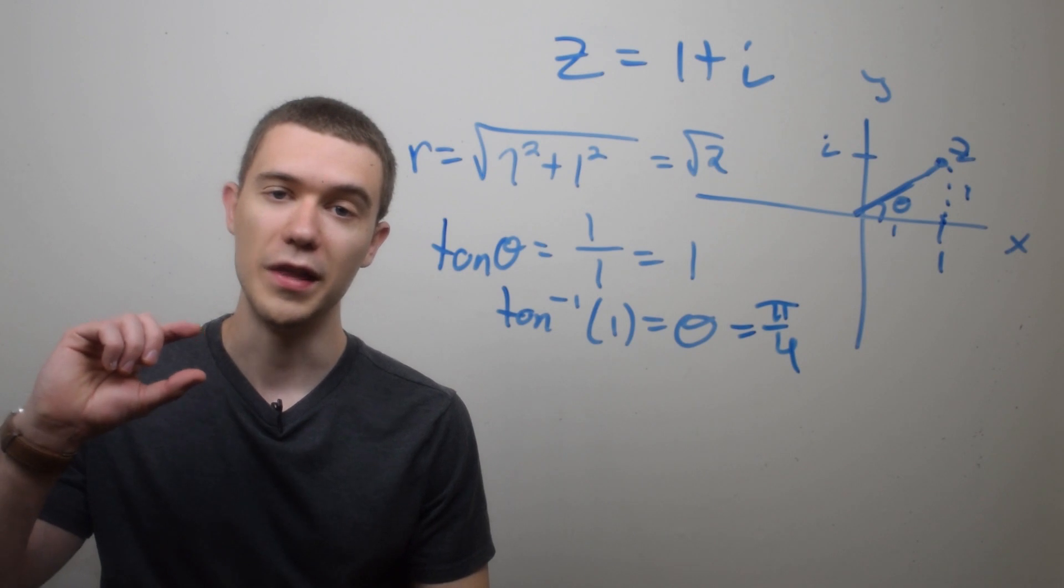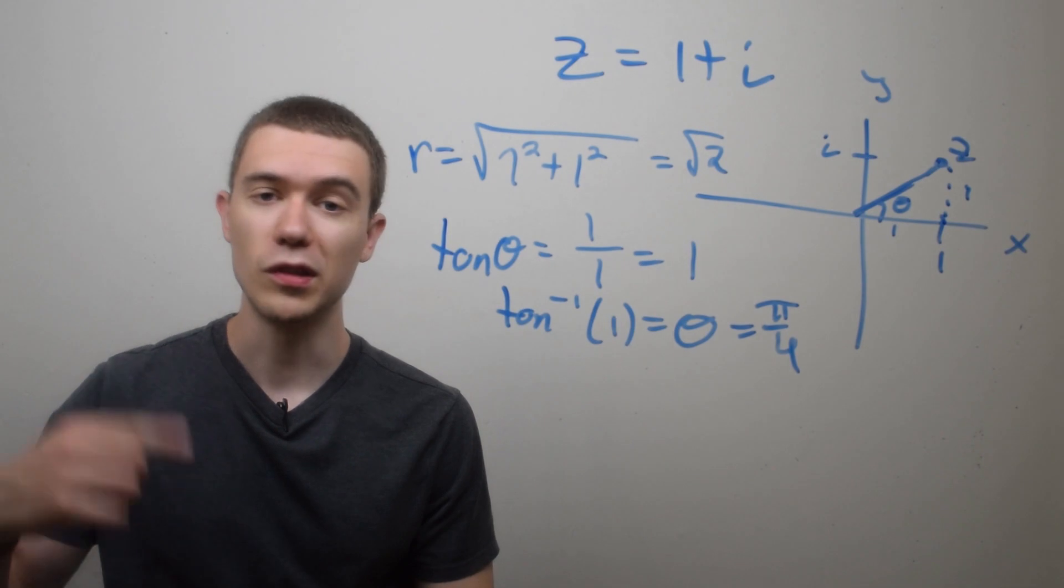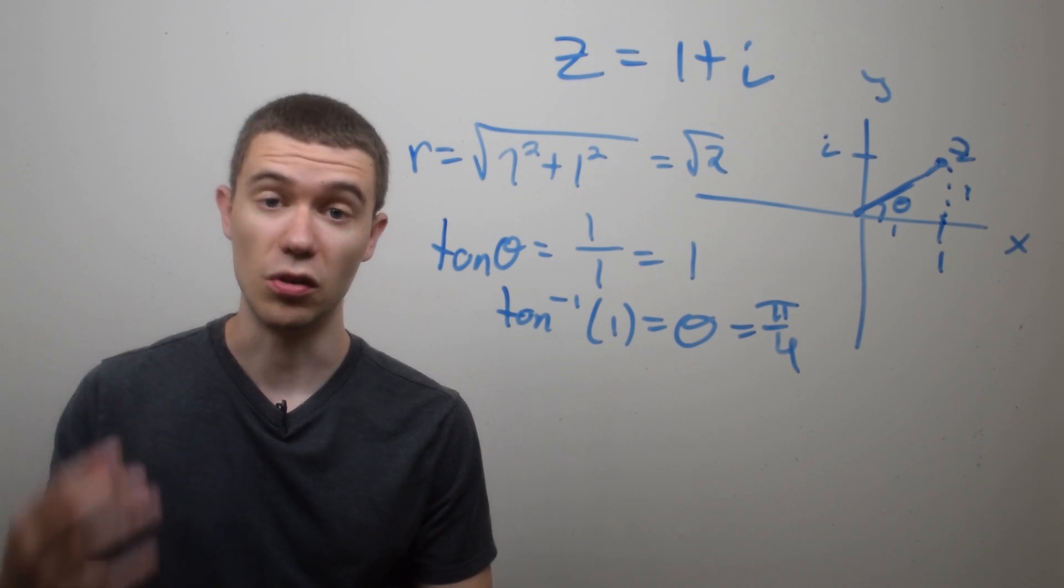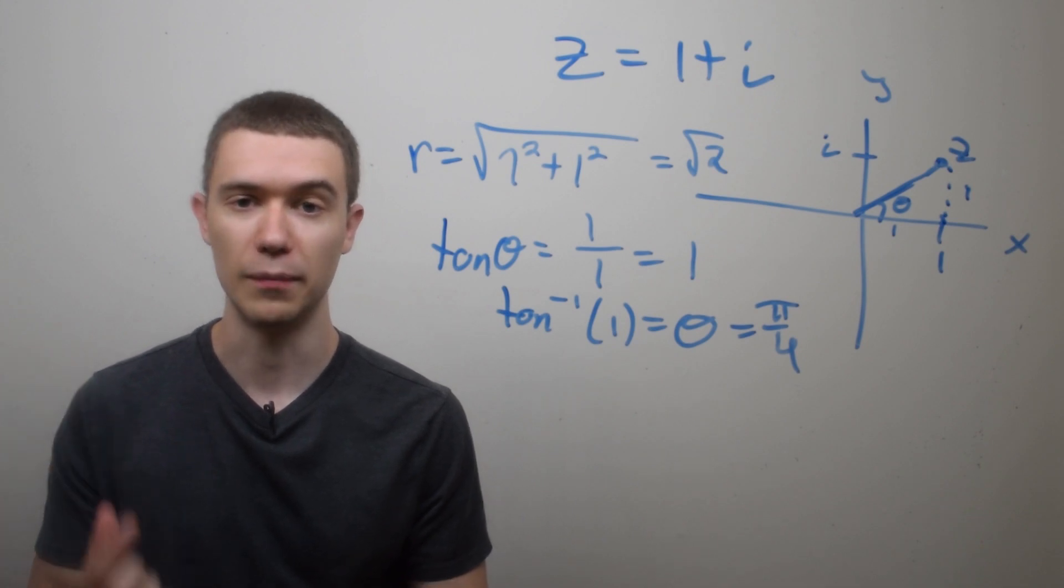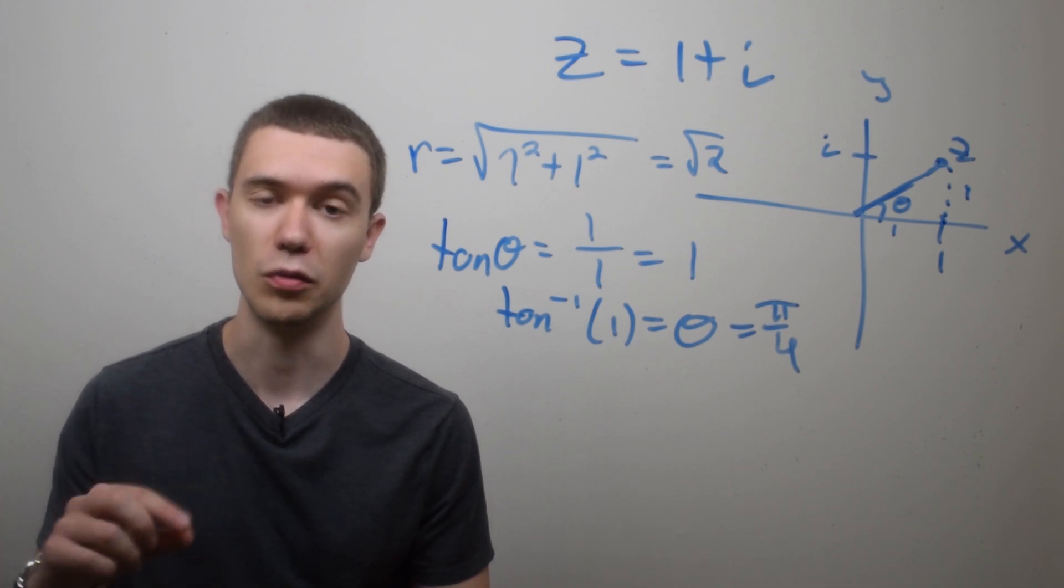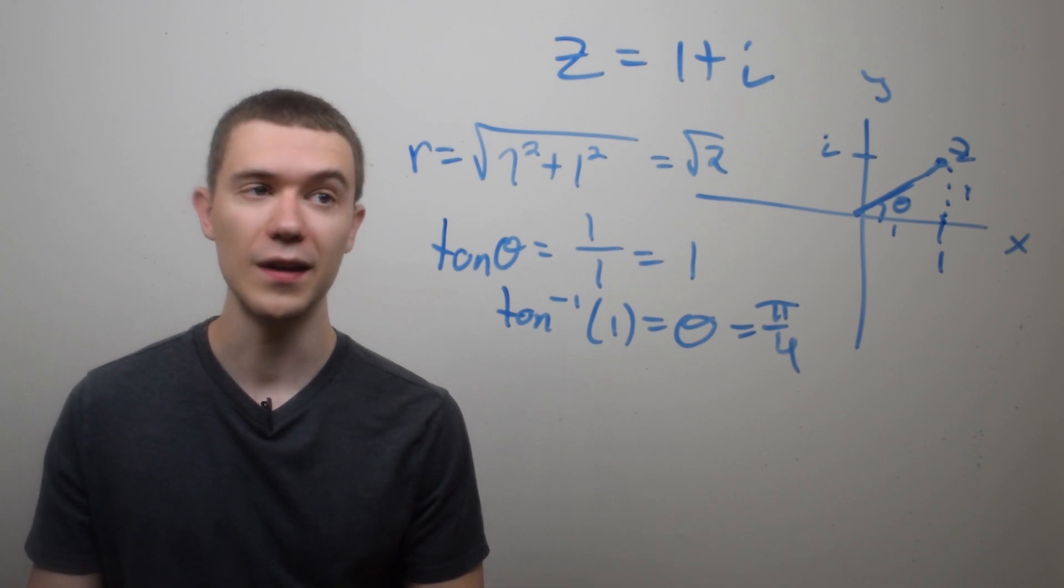Now, this is not unique. Remember, pi over 4 plus any multiple of 2 pi is also valid. I'm just going to use pi over 4 here because pi over 4 is the principal argument, the argument between minus pi to pi.